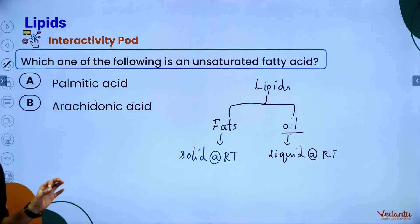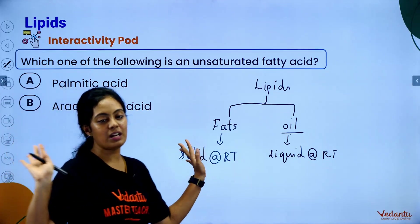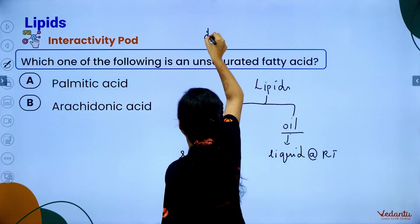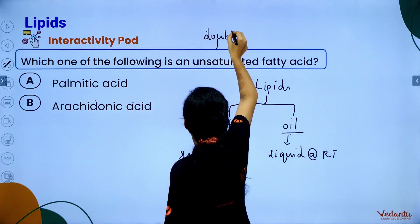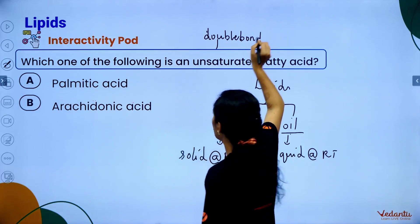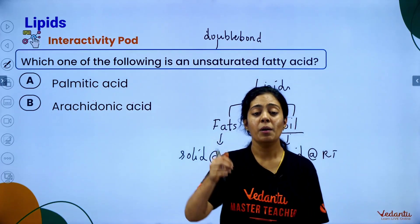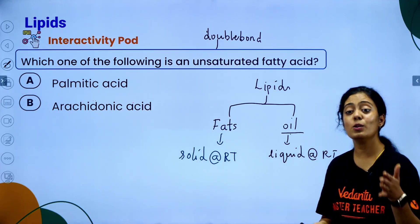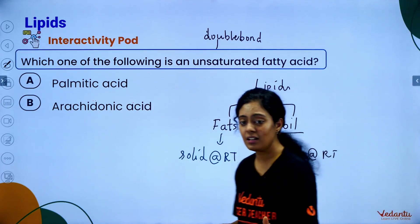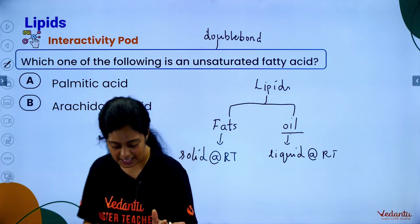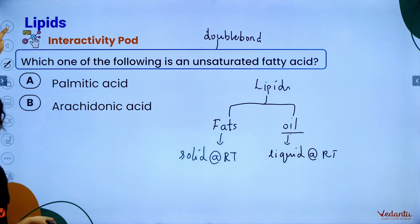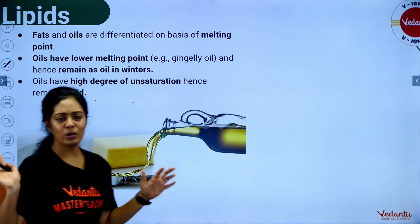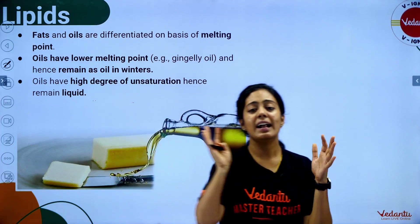Practice question: Which of the following is an unsaturated fatty acid? Unsaturated means it contains a double bond. Palmitic acid has no double bond; arachidonic acid has double bonds — so it is an unsaturated fatty acid. The answer is option B — arachidonic acid.